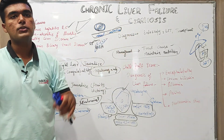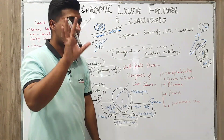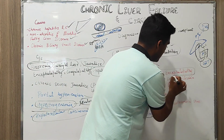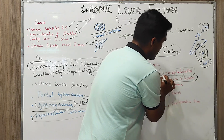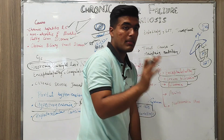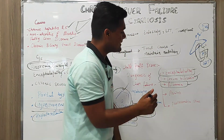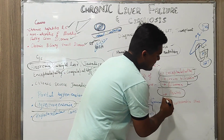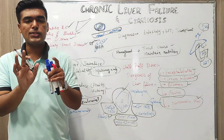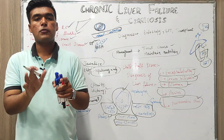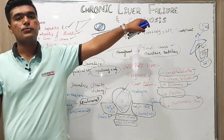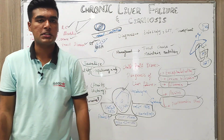For prognosis, we use the Child-Pugh score, which has five major factors. First, we check for encephalopathy; second, serum bilirubin; third, serum albumin; fourth, ascites; and fifth, prothrombin time. Knowing these five factors helps us make a prognosis and guide the treatment of chronic liver failure and cirrhosis.